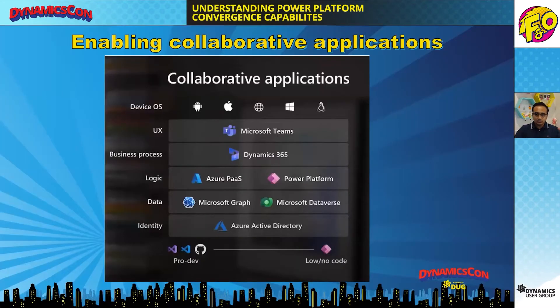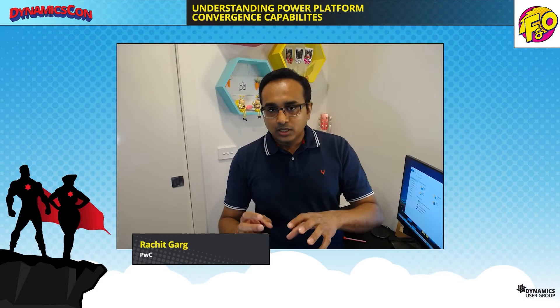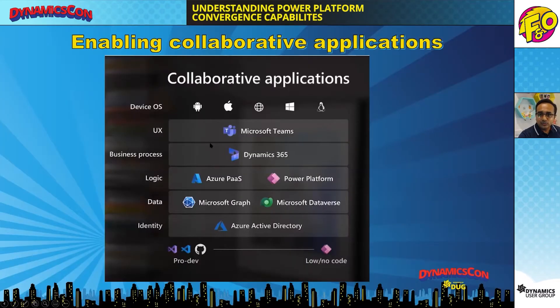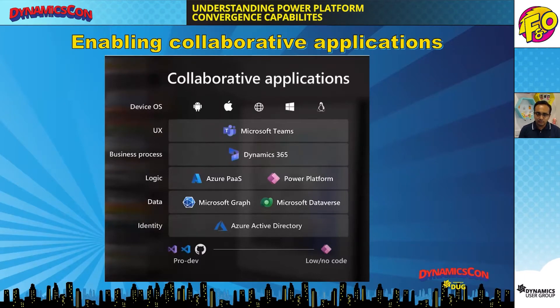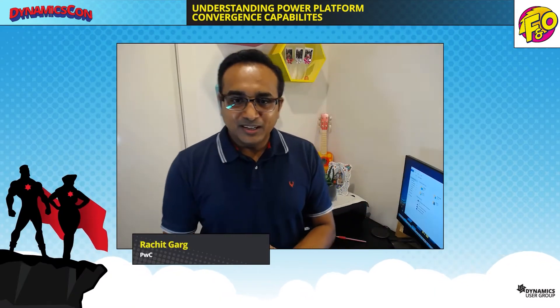Once all this collaboration happens, the whole collaborative applications vision becomes a reality. Business users will not care about which is the source system for master data. Your data will be seamlessly available across multiple applications, and you will also get capabilities to do tasks in Teams — such as approvals or viewing customer data from different Dynamics applications. Microsoft is working toward building collaborative applications, and that's why all these platform convergence tools were created.